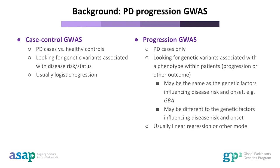Here I have summarised the key differences between the types of GWAS. In a case-control GWAS, you are comparing PD patients to healthy controls in order to look for variants associated with disease risk. This is usually done with a logistic regression as your outcome is binary, either case or control. In a progression GWAS, this is usually a GWAS where you are looking within Parkinson's patients only. This type of GWAS will give you information about genetic variants associated with a particular phenotype within patients, for example, the rate of progression.